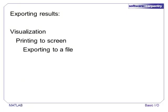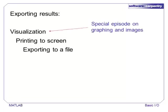The other half of file I/O is retrieving results from MATLAB. There are multiple ways to save data. We can save a plot or image of our data. We can save printed output, such as a series of commands and their results, or we can export variables to a file. Visualization is a large topic that deserves its own episode.